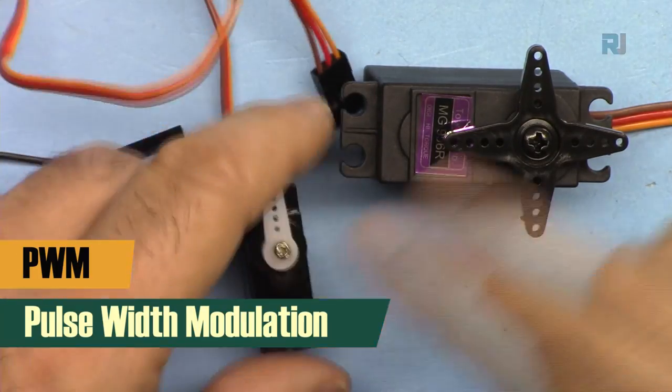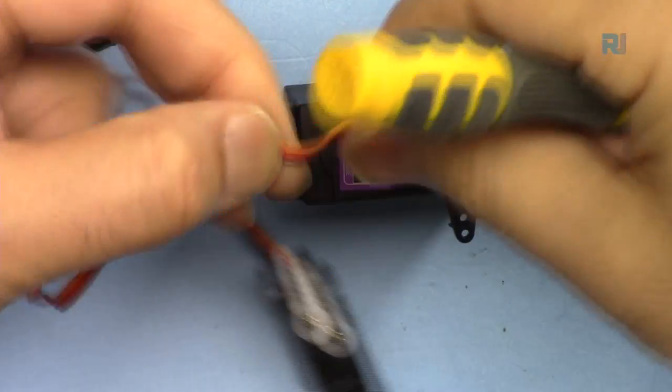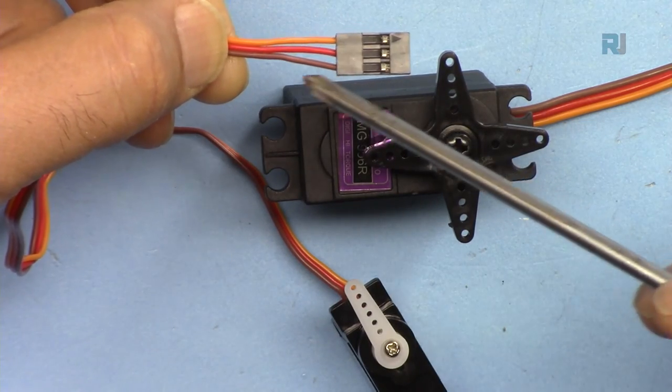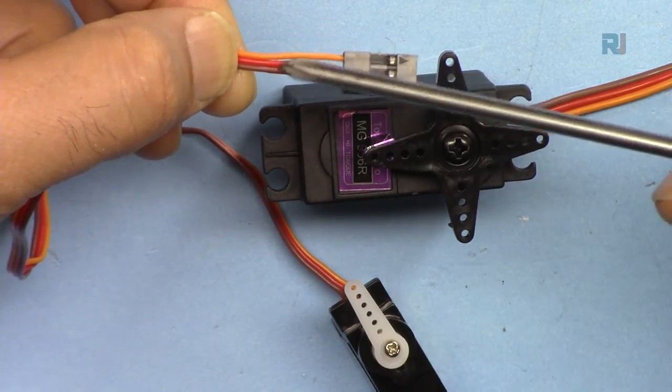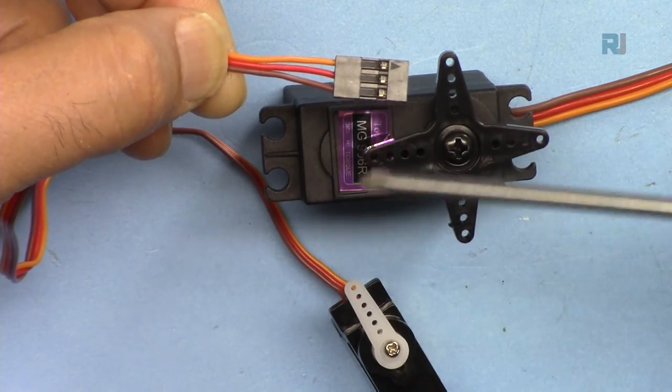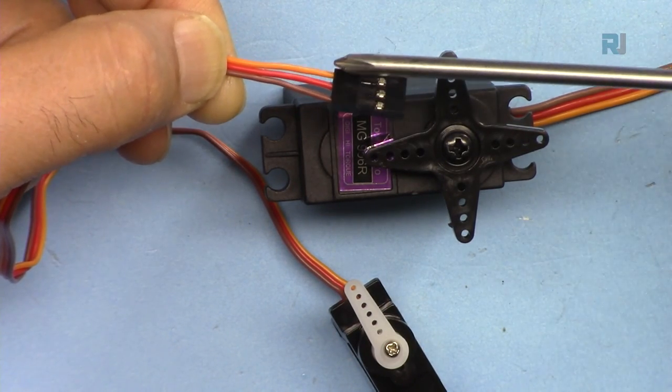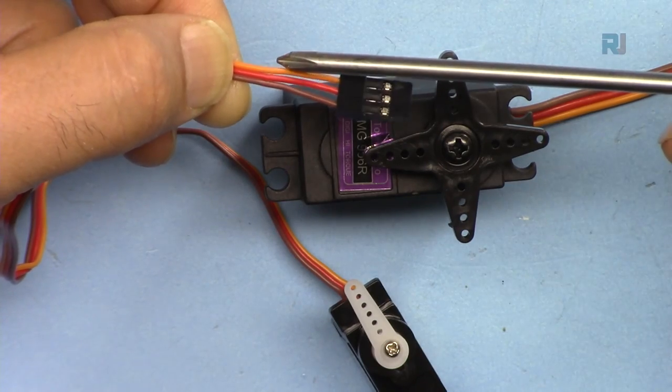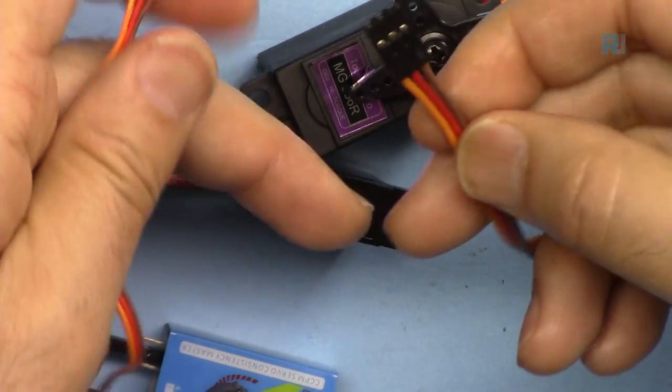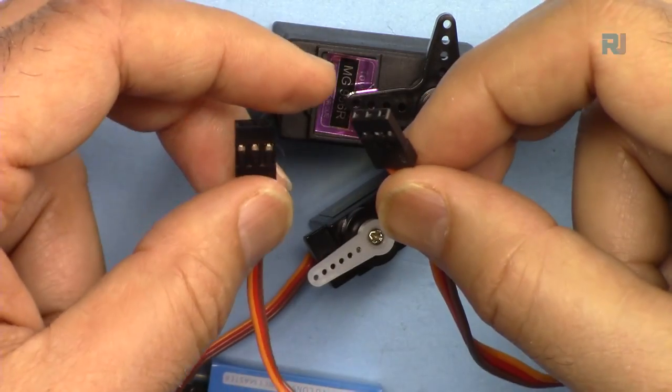It needs a pulse width modulation signal to be controlled. The servo has three wires. The darkest wire, brown or black, is always ground. The middle wire is always the power, usually 5 volts for this small servo. The last pin, which is orange or white, is the signal where the signal is controlling the servo.